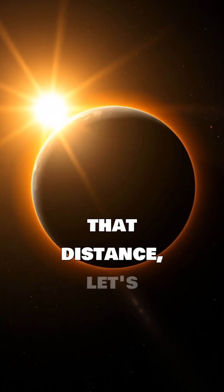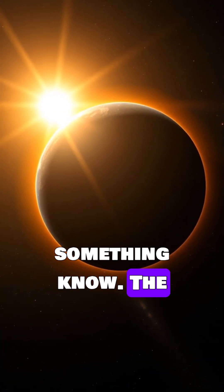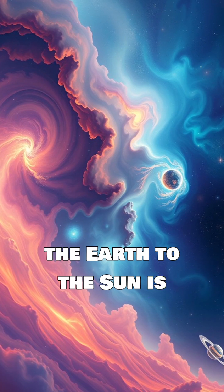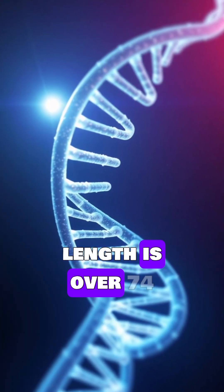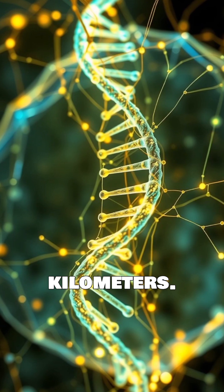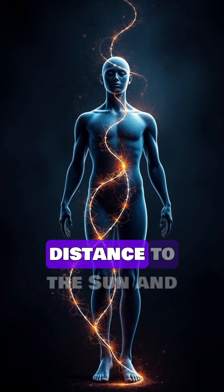To truly grasp that distance, let's compare it to something we know. The average distance from the Earth to the Sun is about 150 million kilometers. Your total DNA length is over 74 billion kilometers. That's hundreds of times the distance to the Sun and back.